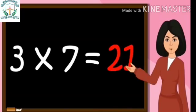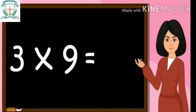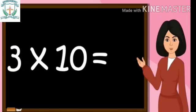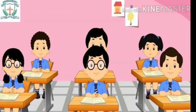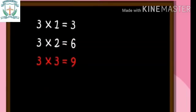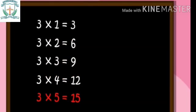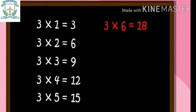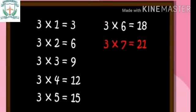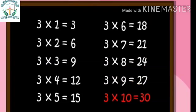Table of Three: 3 ones are 3, 3 twos are 6, 3 threes are 9, 3 fours are 12, 3 fives are 15, 3 sixes are 18, 3 sevens are 21, 3 eights are 24, 3 nines are 27, 3 tens are 30.